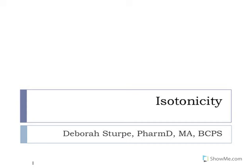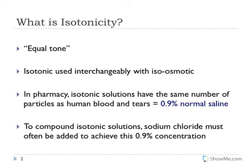Welcome to our lesson on isotonicity, also called sodium chloride equivalent problems. In pharmacy compounding, it's important to understand how to make a product isotonic. Isotonicity literally refers to equal tone, meaning the number of particles in the drug fluid being given is the same as in human blood and tears. By giving isotonic solutions, we prevent water from moving inappropriately into and out of red blood cells.